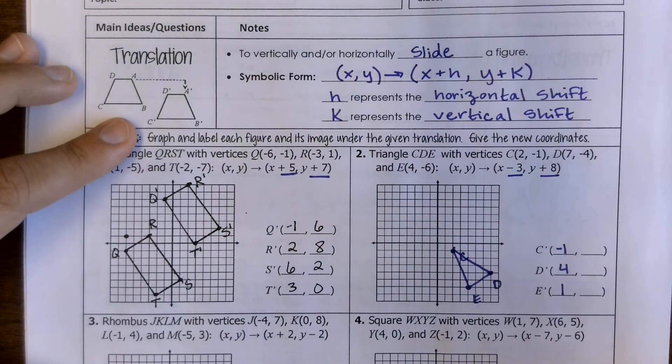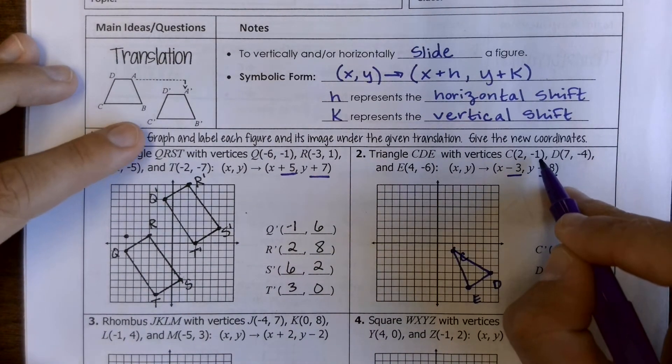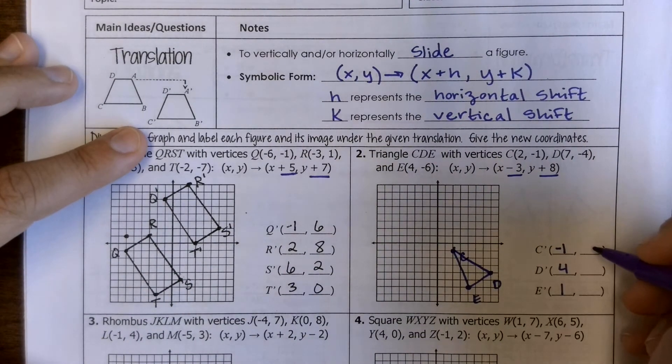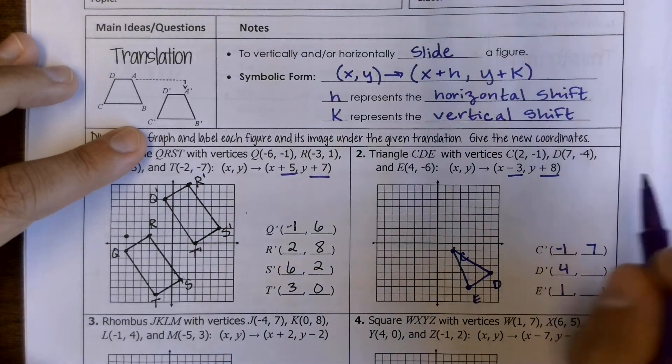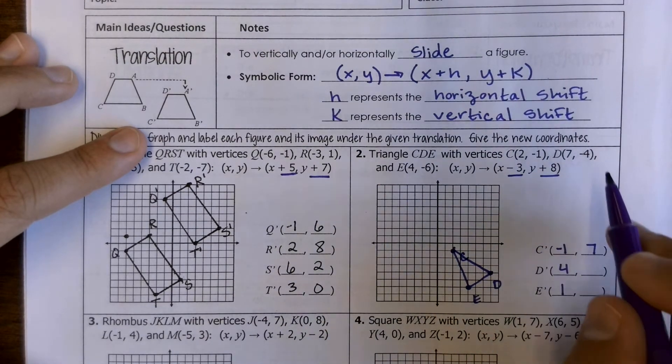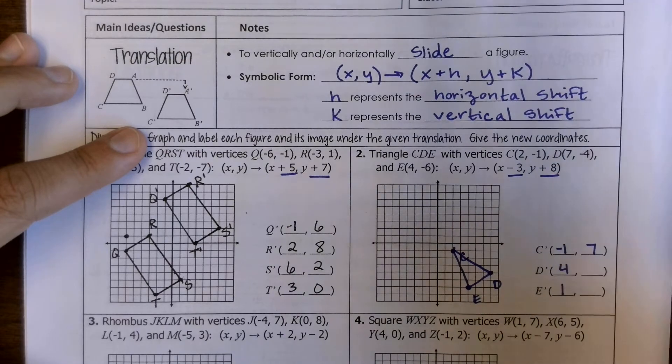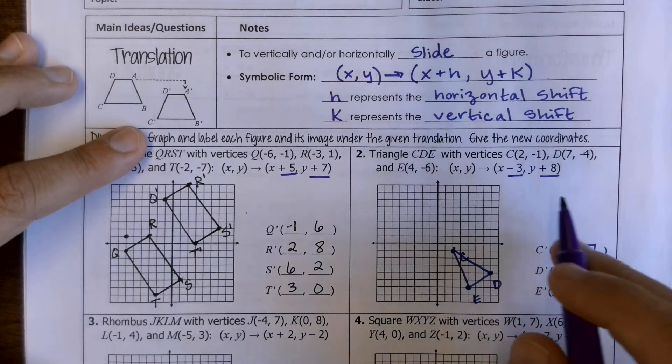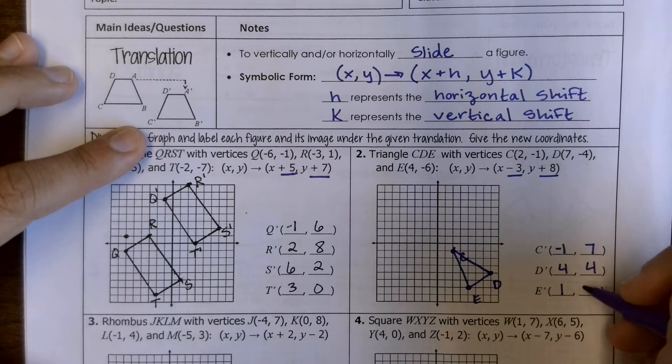For our y's we're adding 8, which is going to shift it up. But adding 8 to my y values, I get my C prime y value will be at 7. Be very careful with your signs here. This negative 1 plus 8 is 7. Negative 4 plus 8 is 4. And my negative 6 plus 8 is 2.